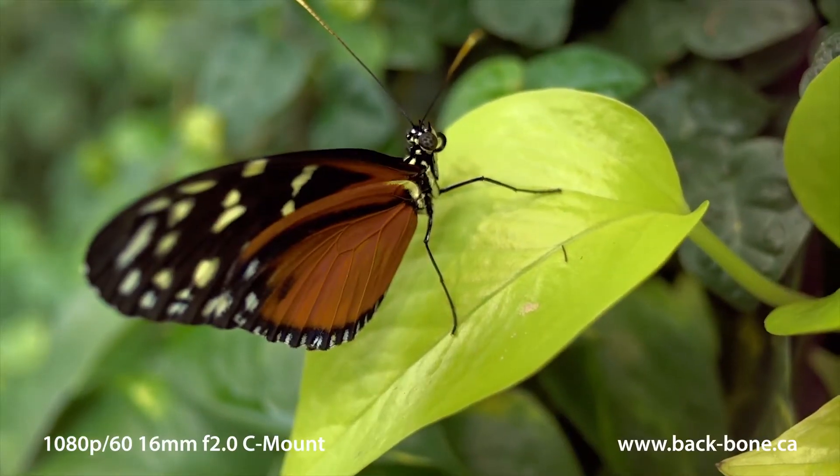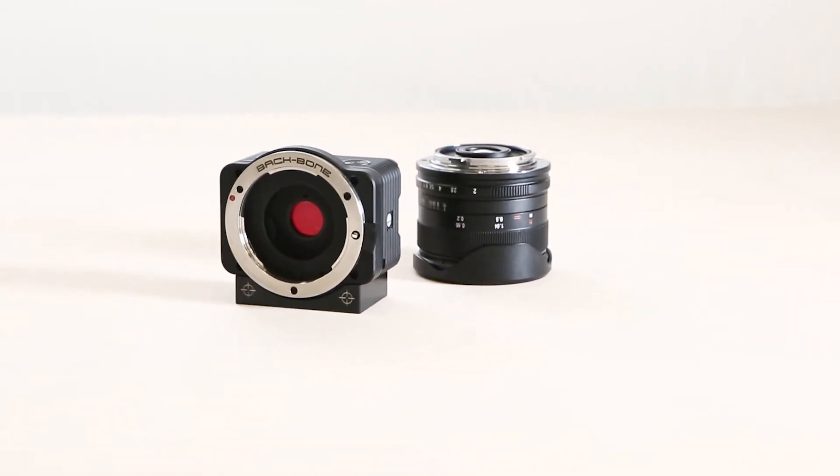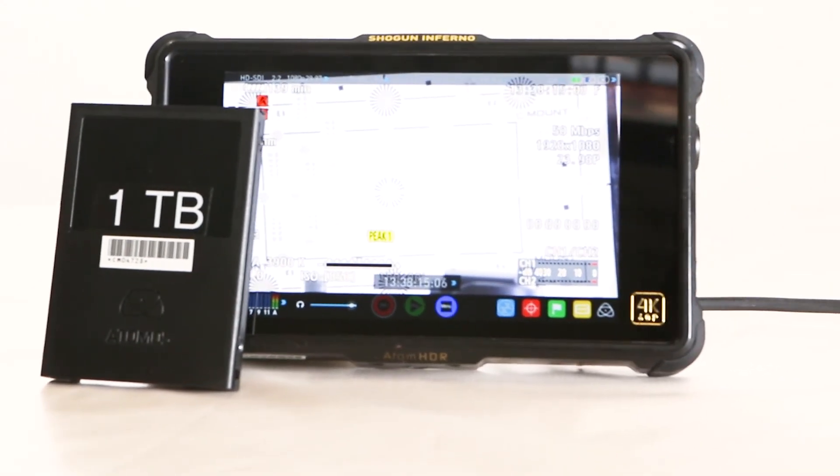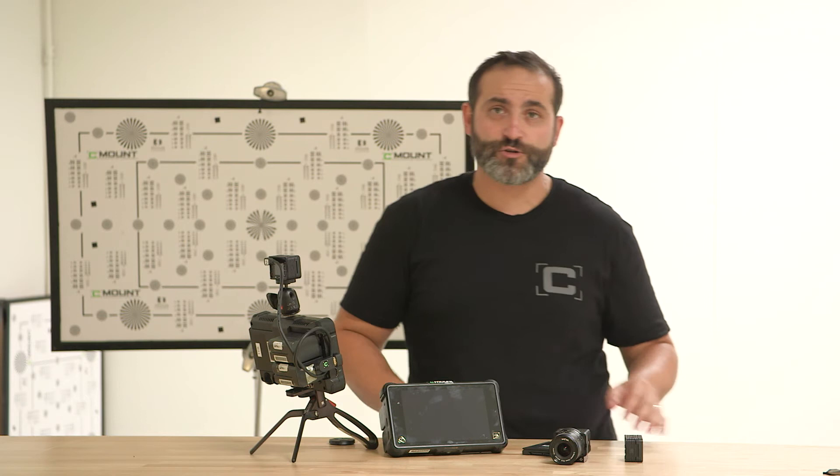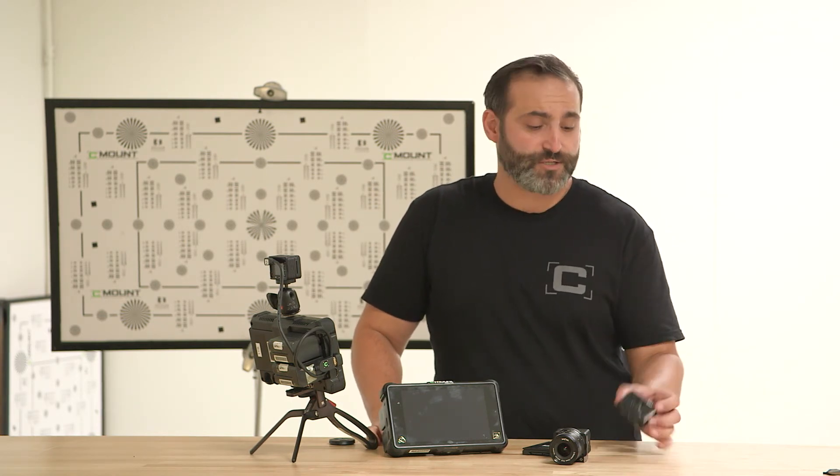The Sony RX0 package comes with one Micro Four Thirds lens, the modified body, the 1TB card, the Shogun Inferno, batteries and charger, and all necessary cables. It's a really cool kit. You should check it out on our site.